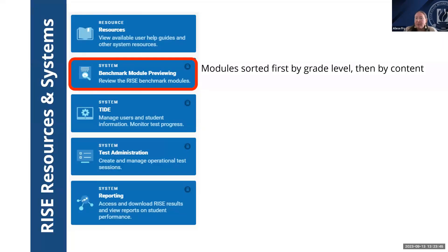The second menu tab is the Benchmark Module Preview System, available to all users except students registered in TIDE. This system allows users to preview all available benchmark modules at any time to determine appropriate instructional use. It's not appropriate to use the Benchmark Module Preview System to review benchmark modules with students or to copy any items into another format — only authorized RISE account users can access them. Directions for how to review benchmark modules in the preview system are found in the TAM. Once you've logged in and selected a module to preview, you can toggle between questions and view any stimuli associated with the questions, like a reading passage.